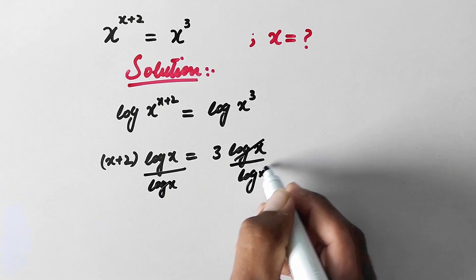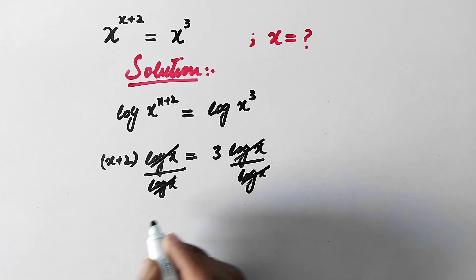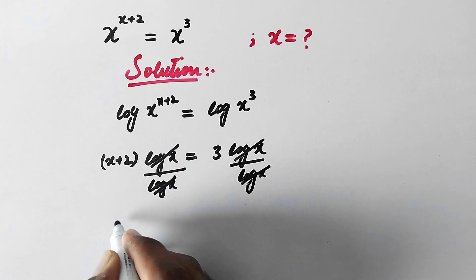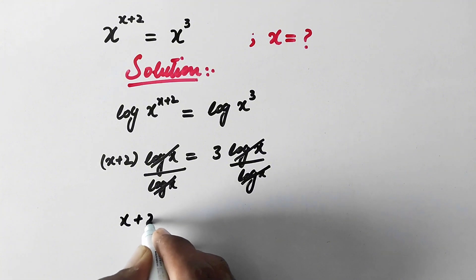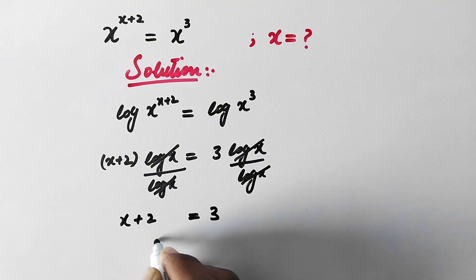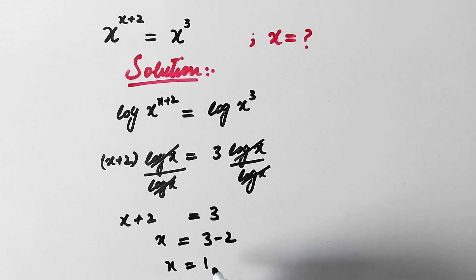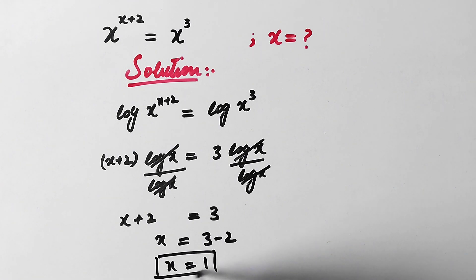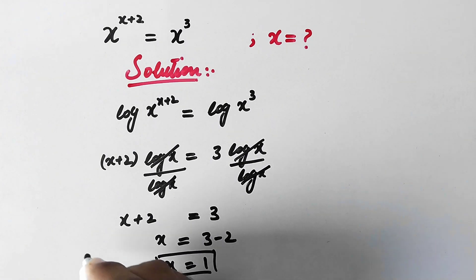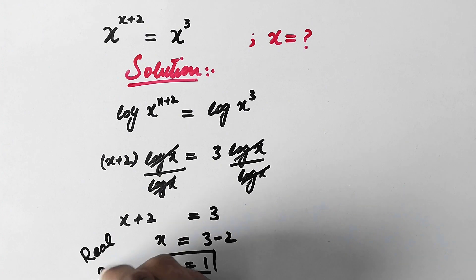So these values will cancel each other and we are left with x plus 2 is equal to 3, and x is equal to 3 minus 2, so x is equal to 1. That is the only real root of x by this method.